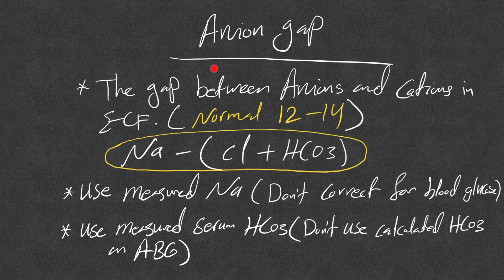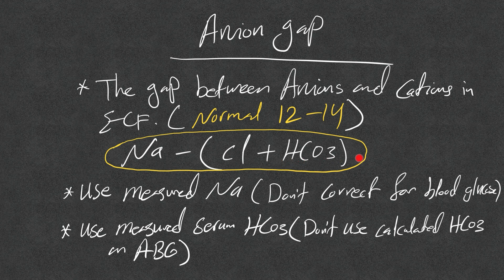The anion gap is the gap between anions and cations in the extracellular fluid. Normally it's 12 to 14, and it's calculated using the sodium level — we subtract from that the sum of chloride and bicarb. Very importantly, use the measured sodium — do not correct for blood glucose.